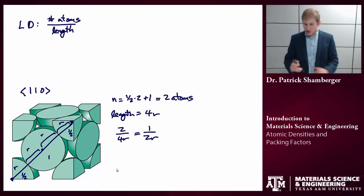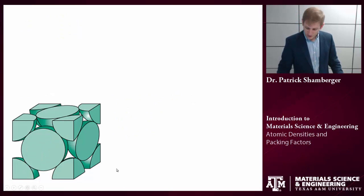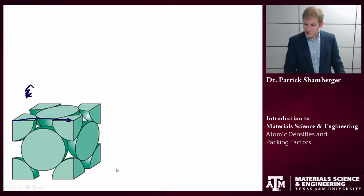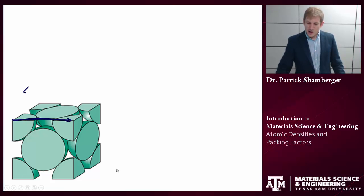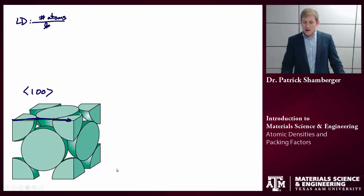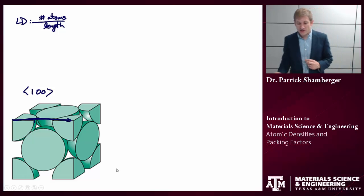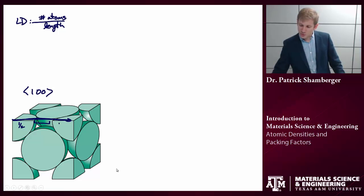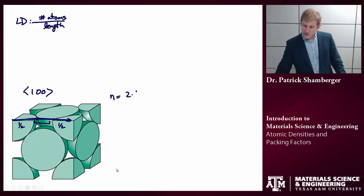Let's try a different example. Same structure, but let's look at the [1,0,0] family of directions. Again, linear density is calculated as number of atoms per unit length. The number of atoms here: I go through one-half of an atom on one side and one-half of an atom on the other side. So n equals 2 times one-half, equals 1 atom.